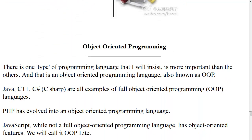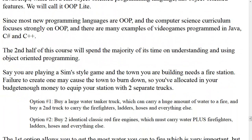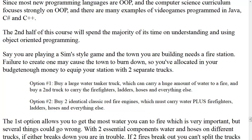Object-oriented programming. There is one type of programming language I will insist is more important than the others: an object-oriented programming language, also known as OOP. Java, C++, and C# are all examples of full OOP languages. PHP is also object-oriented. JavaScript, while not a full OOP language, has object-oriented features — call it OOP Lite. Since most programming languages are OOP, the computer science curriculum focuses strongly on OOP, and many video games are programmed in Java, C#, and C++, the second half of this course will focus on understanding and using object-oriented programming.